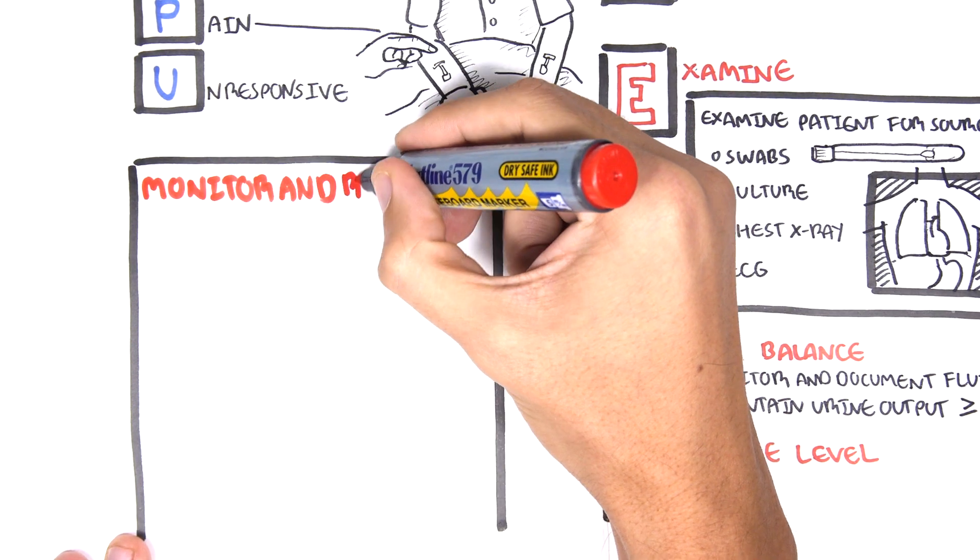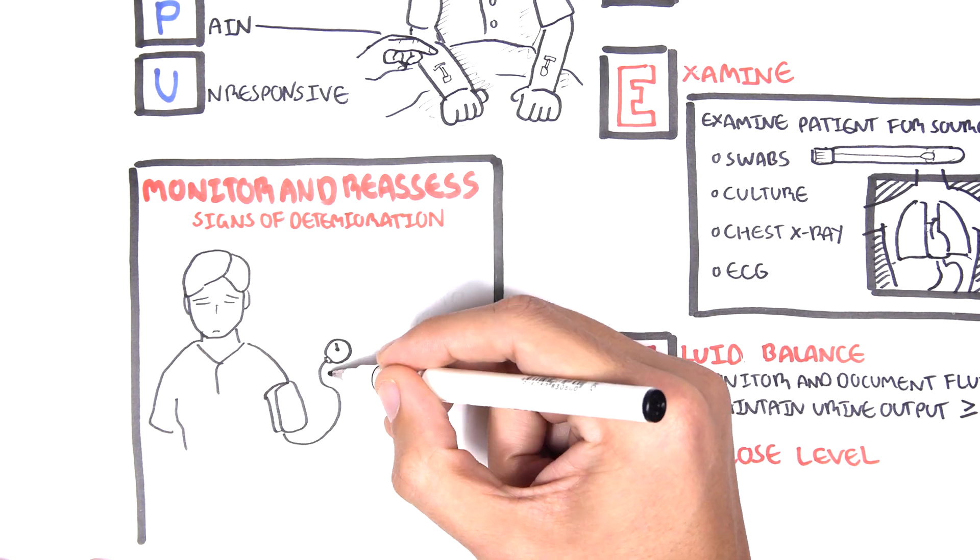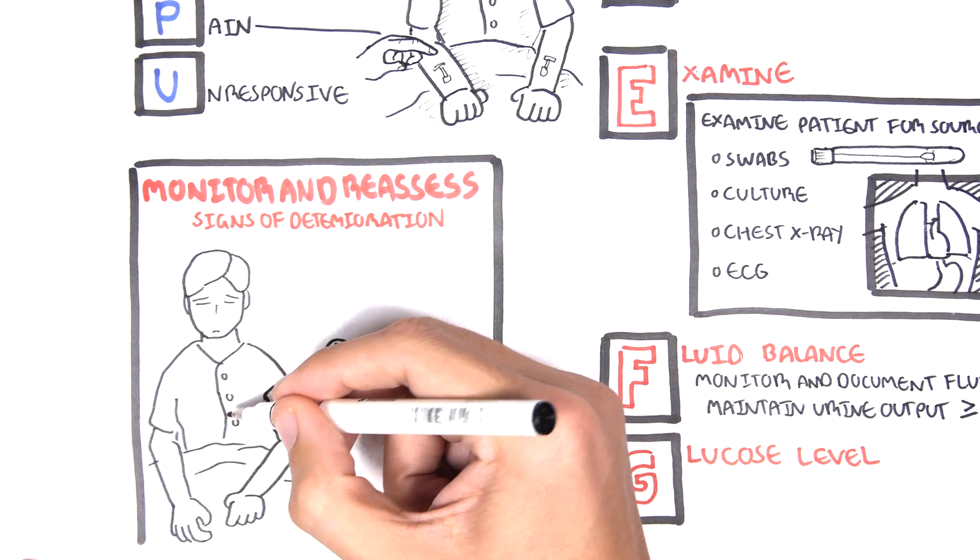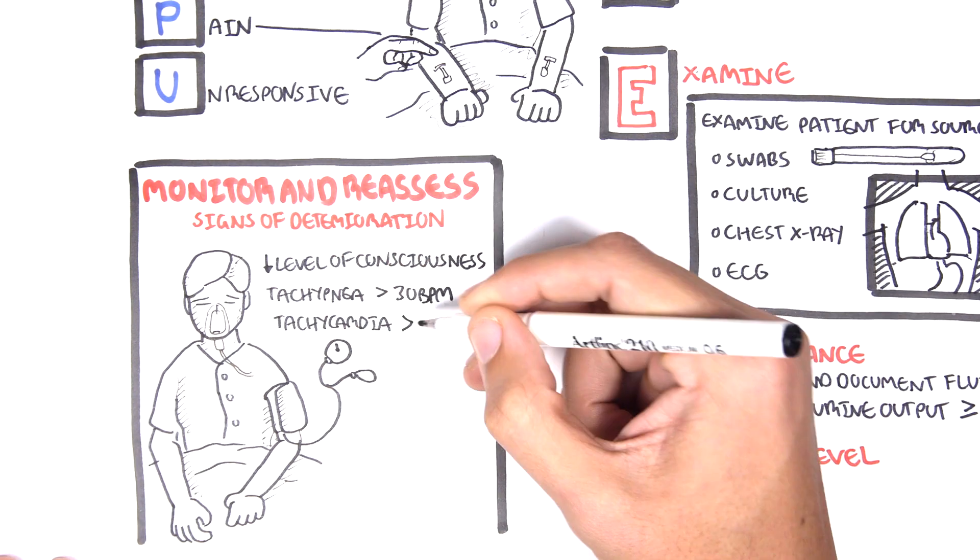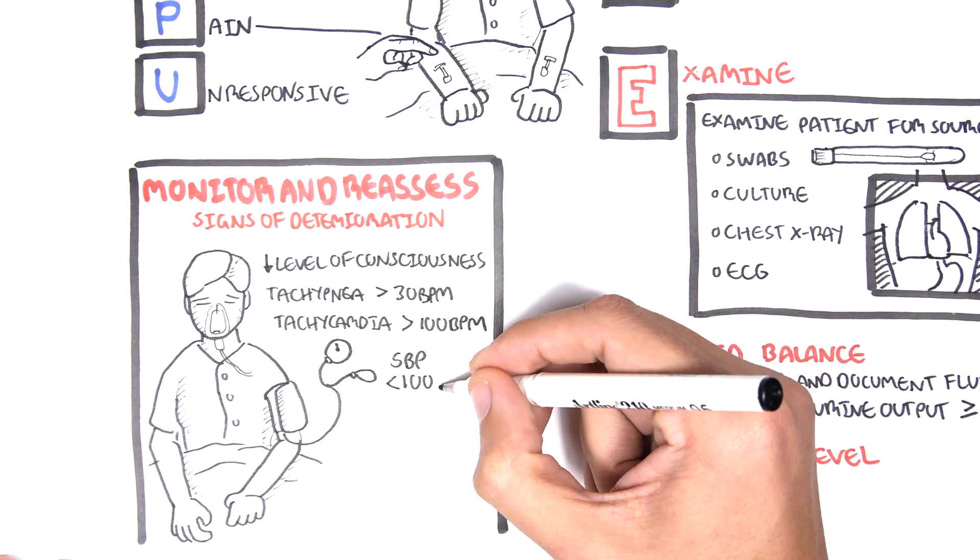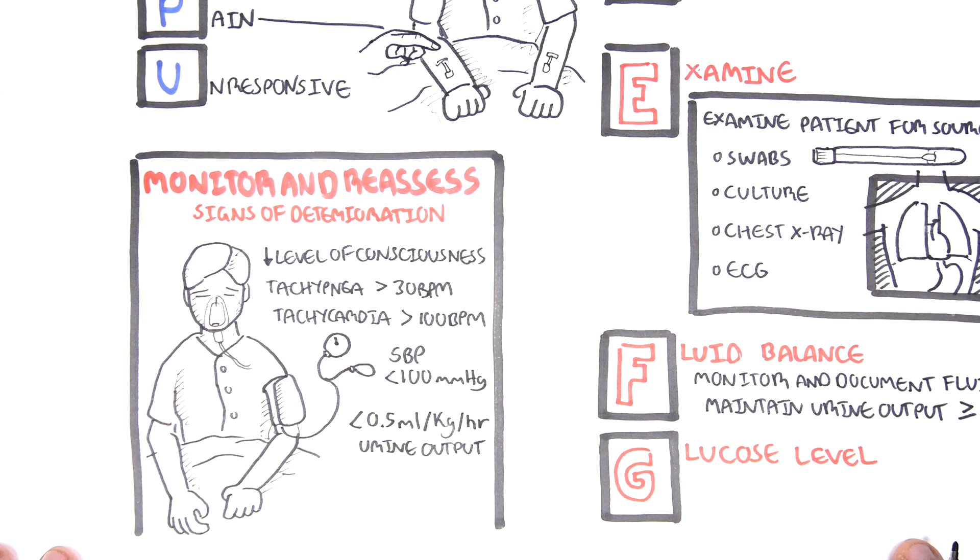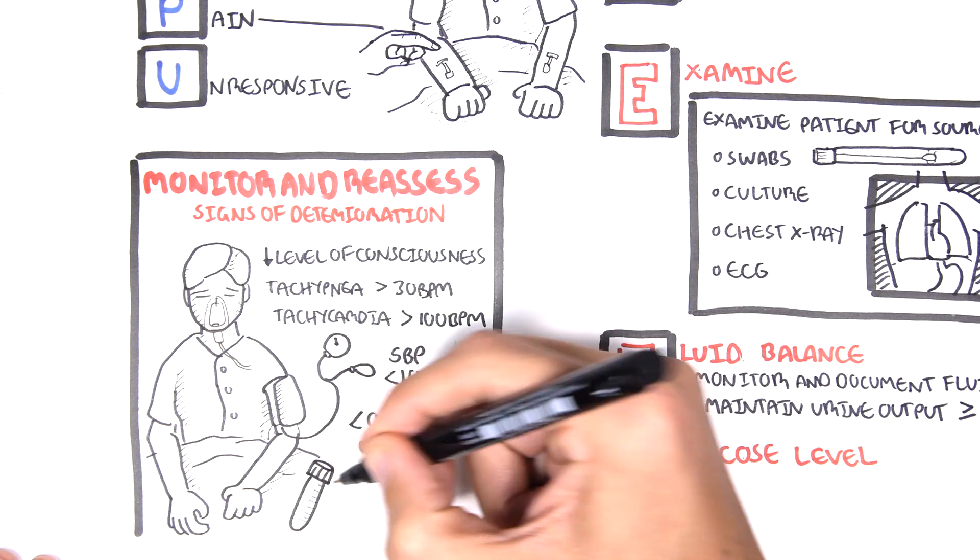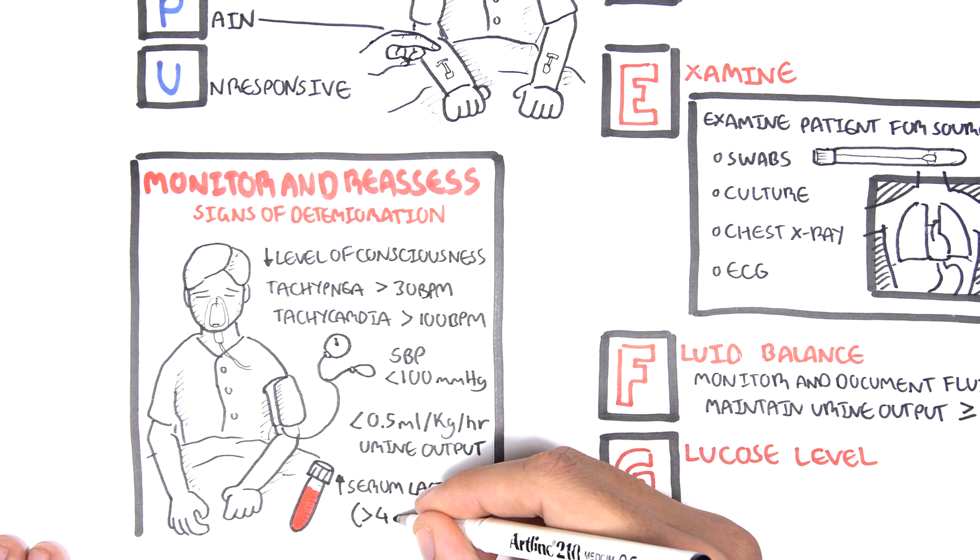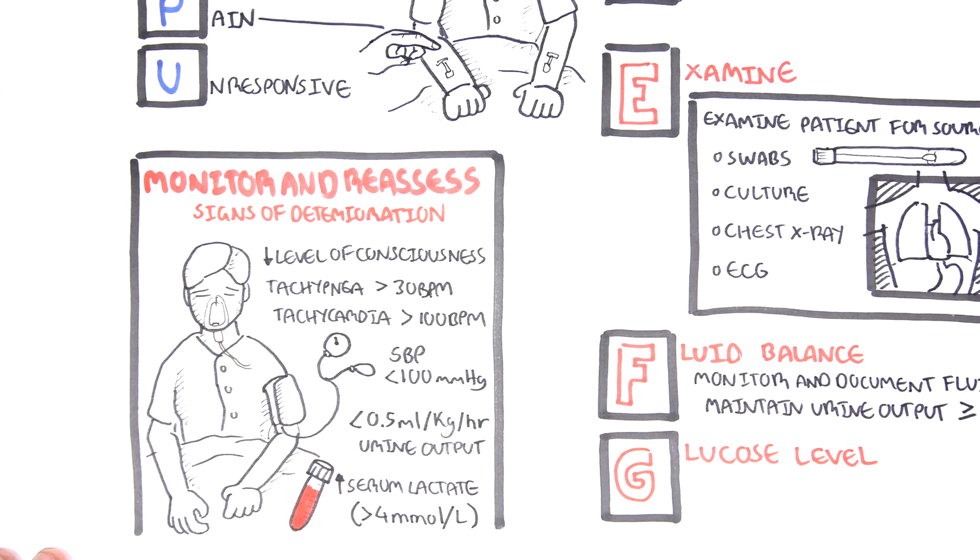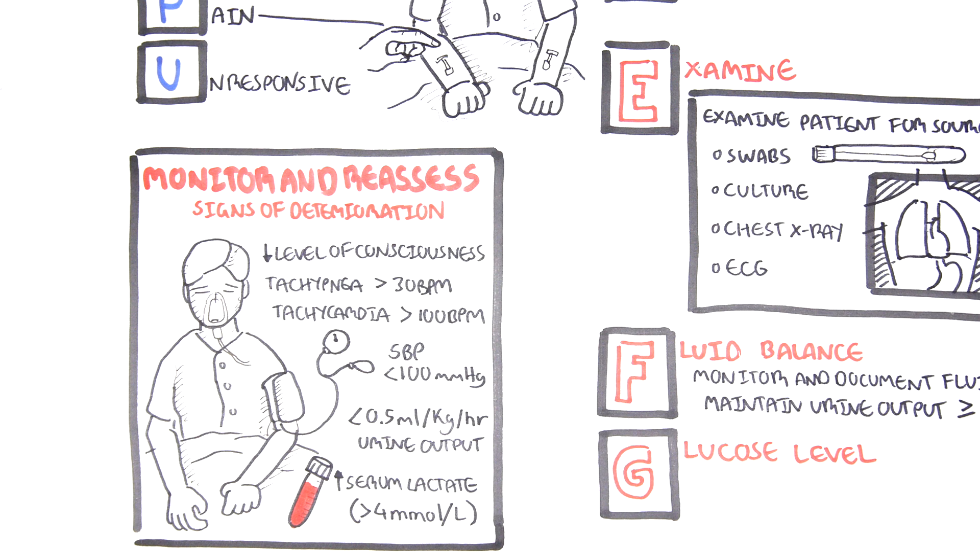It is important to monitor and reassess for any signs of deterioration. These signs can include the patient's level of consciousness going down, the patient becoming more tachypneic and tachycardic, their systolic blood pressure less than 100 or very hypotensive, urine output less than 0.5 milliliters per kilogram per hour despite fluid intervention, or elevating serum lactate above 4 millimoles per liter. It is important to keep chart and look at the trends in the observations chart.